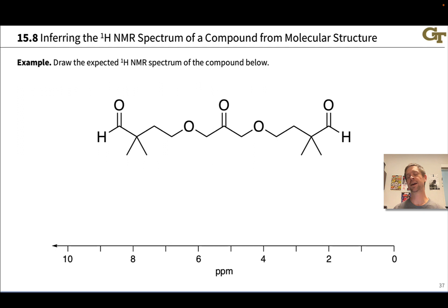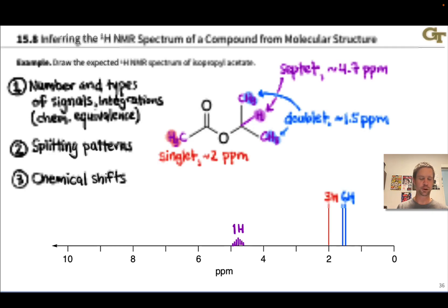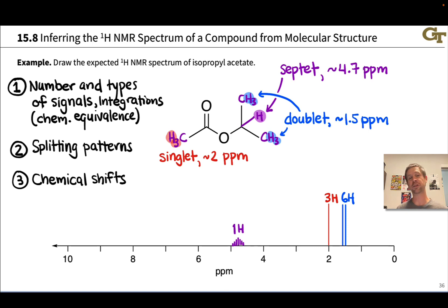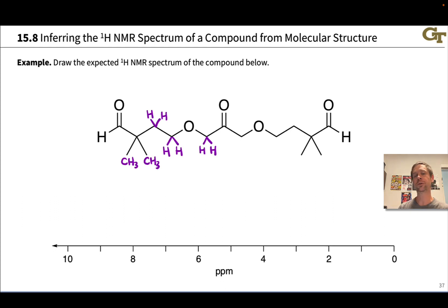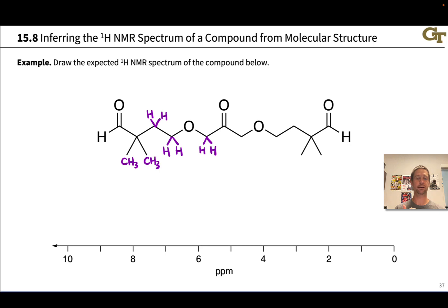Here we have the same idea with a more complicated-looking compound, but we're going to use a little trick to simplify this problem a great deal. We're tasked to draw the expected proton NMR spectrum of the compound, following the same process: numbers and types of signals and integrations first, then splitting patterns, then chemical shifts. Let's start by adding in the implied hydrogens — I'm actually only going to do so on one side of the molecule, for reasons that will become apparent. The aldehyde proton on the far left is out on its own — that's one signal.